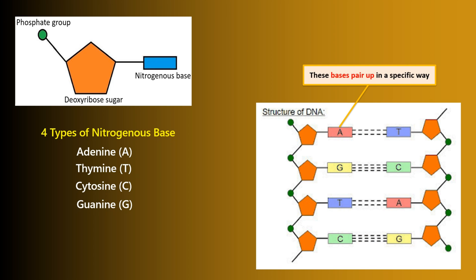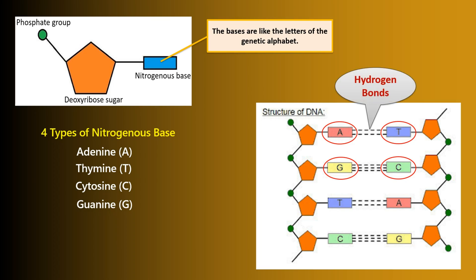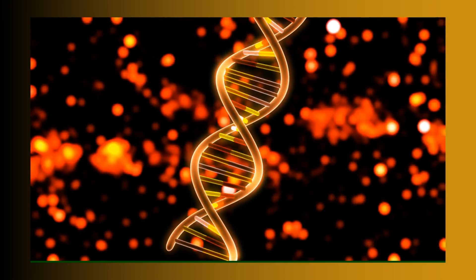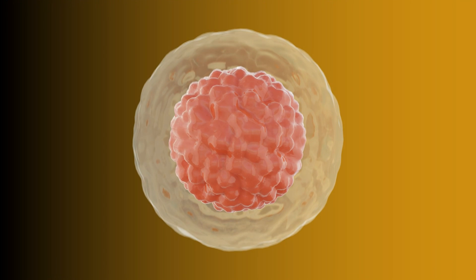These bases pair up in a specific way: adenine with thymine, and cytosine with guanine, forming the famous double helix structure of DNA.